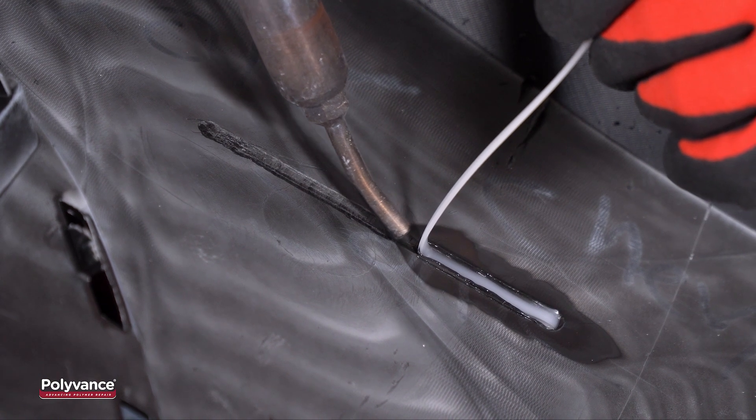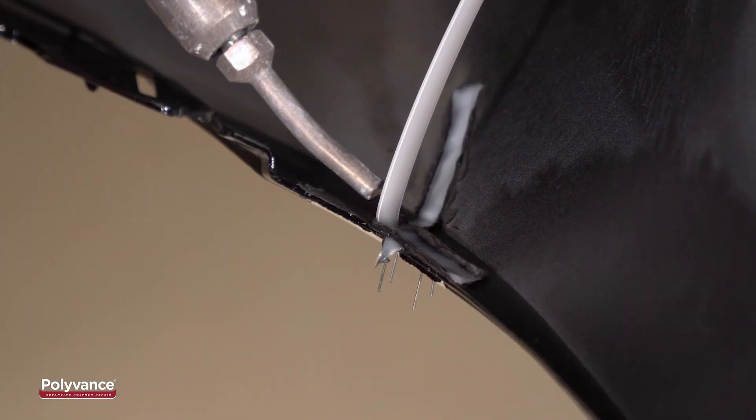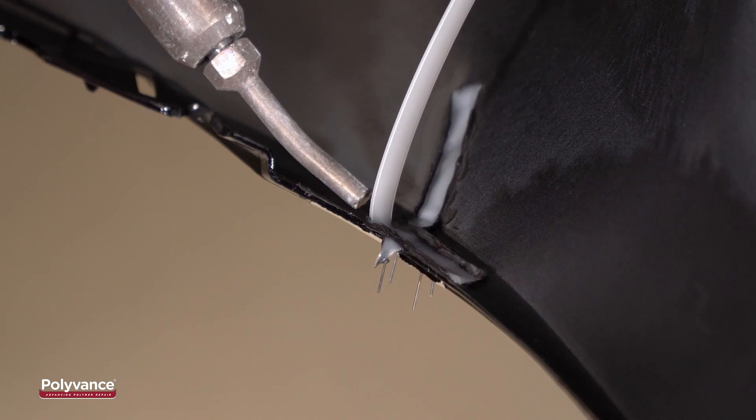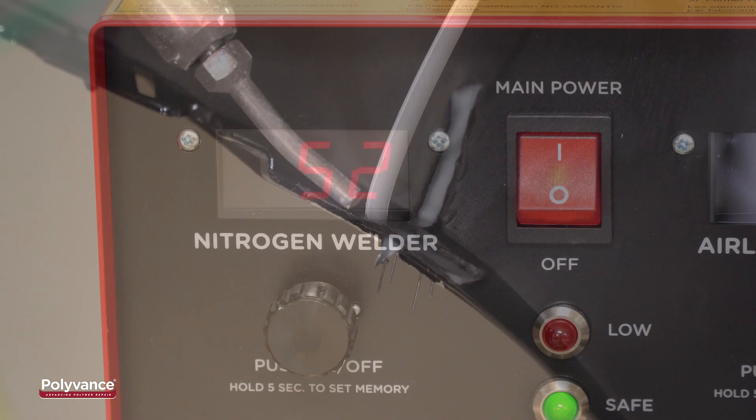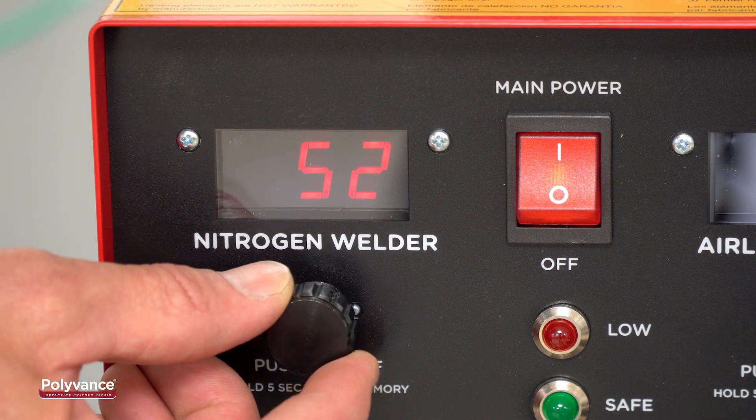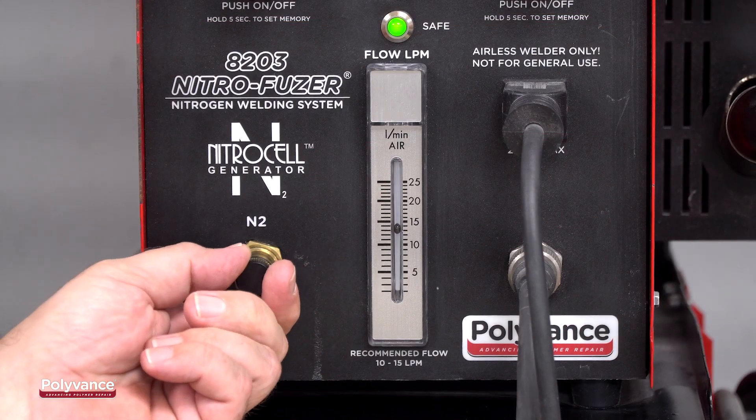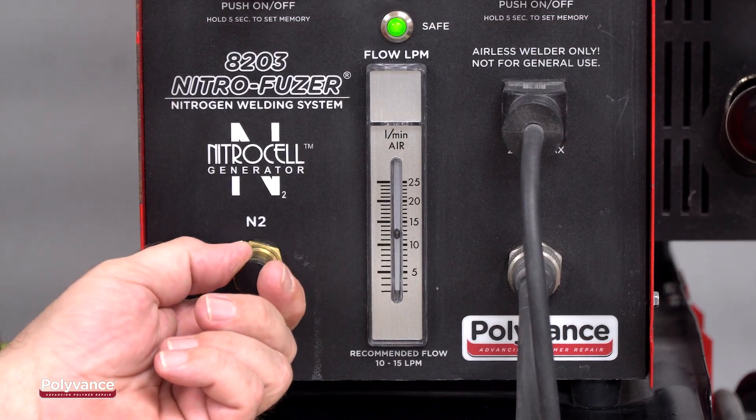Plastic welding with one of Polyvance's nitrogen plastic welders is the fastest, strongest way to repair damaged plastics. Polyvance machines offer precise temperature and flow control to accommodate the different melting points of all thermoplastics.